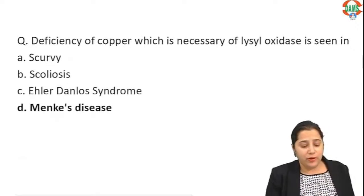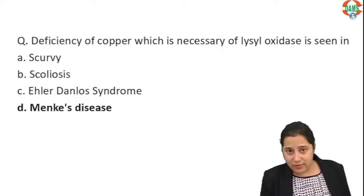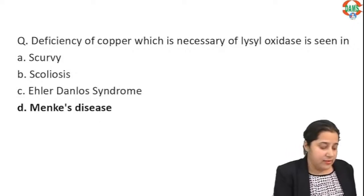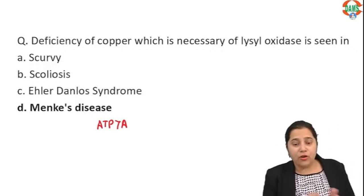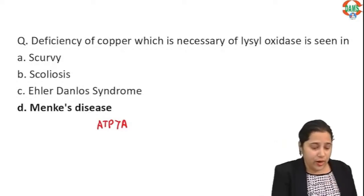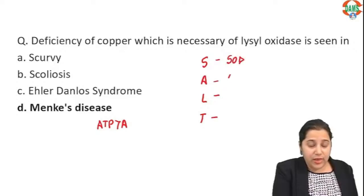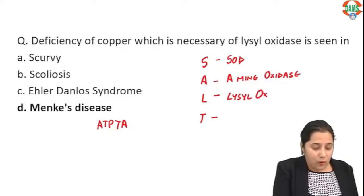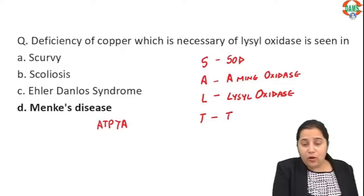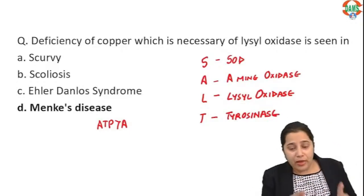Deficiency of copper, which is necessary for lysyl oxidase, is seen in Menkes disease. It is a mutation in the ATP7A protein, because of which copper uptake does not occur, resulting in deficiency. Copper is required by four enzymes — I use the mnemonic SALT: S for superoxide dismutase, A for amine oxidase, L for lysyl oxidase, T for tyrosinase. These are all copper-dependent enzymes.